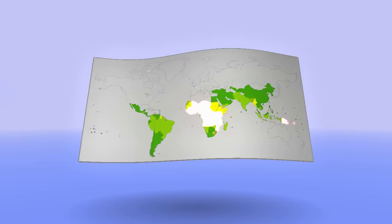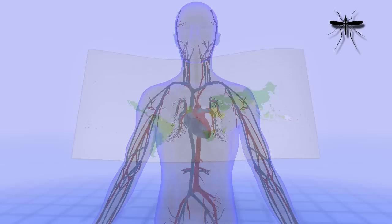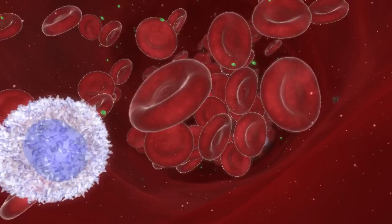Every year malaria kills between one and three million people, mostly young children in Africa. The Plasmodium unicellular parasites that cause the disease are transmitted to the human host through the bite of an infected mosquito.